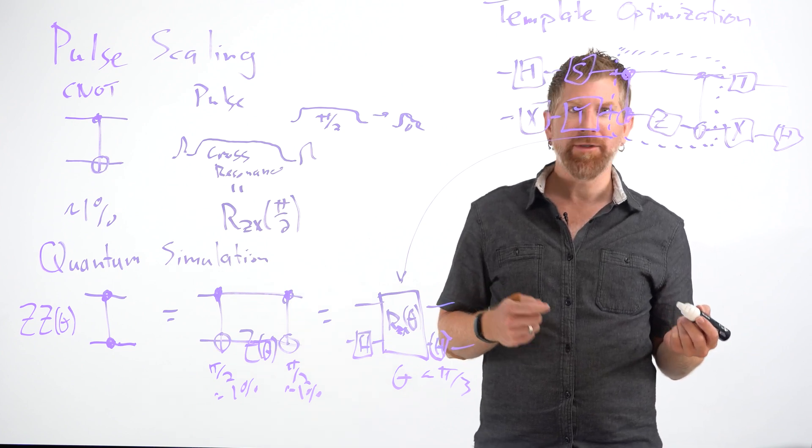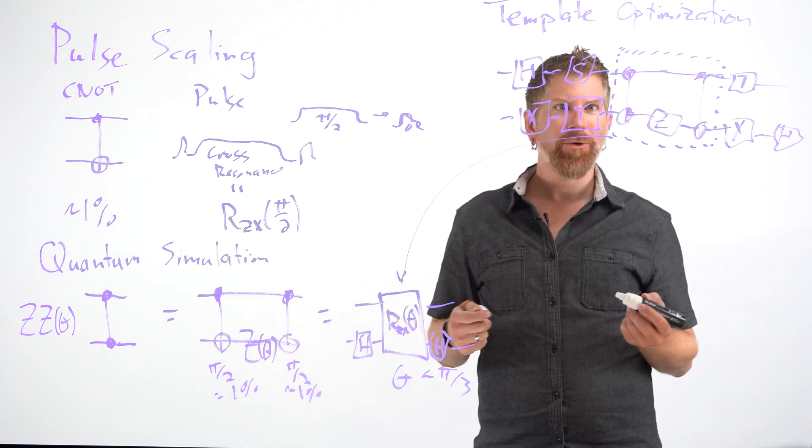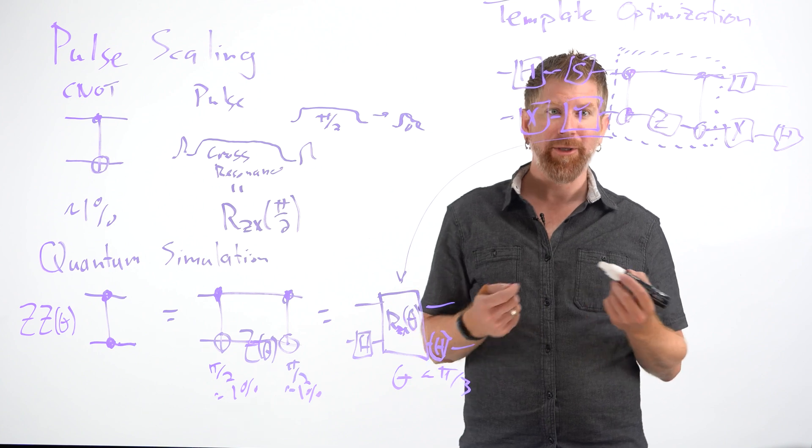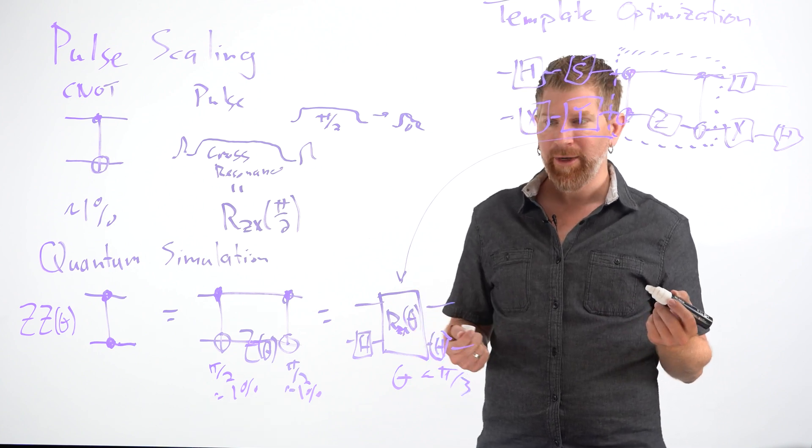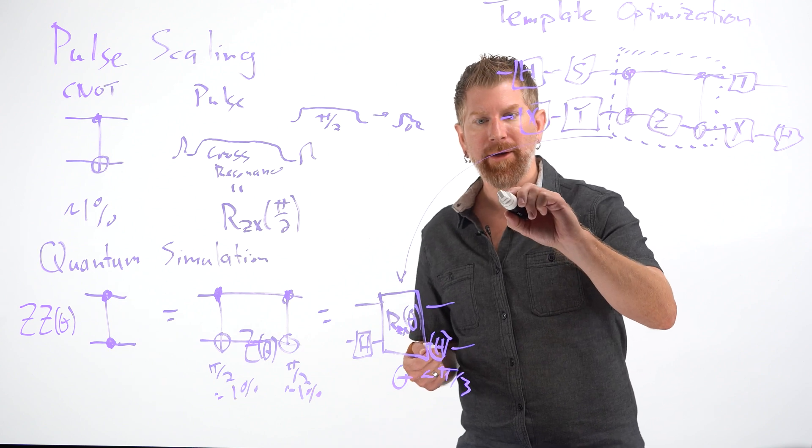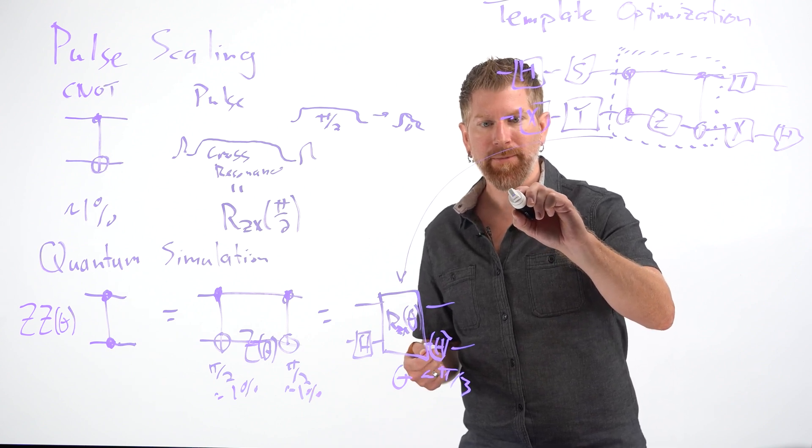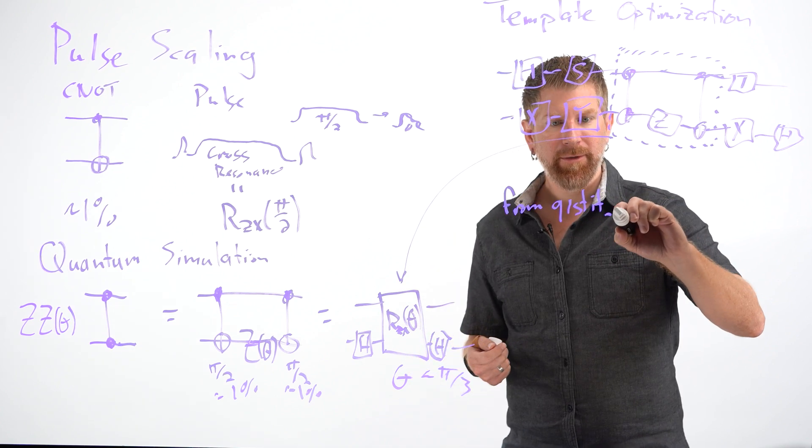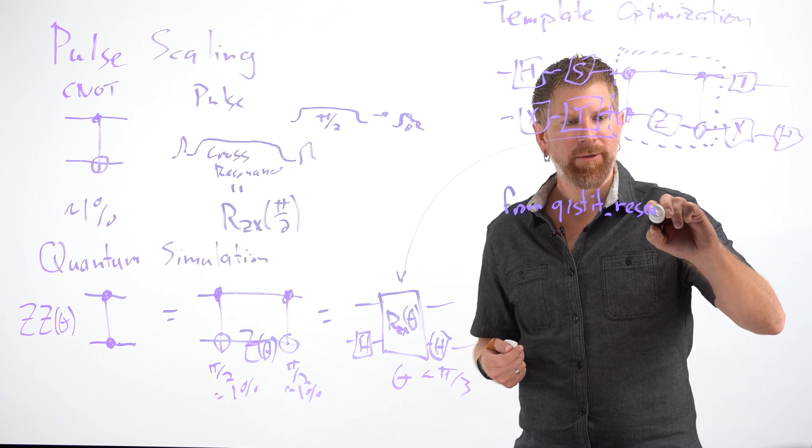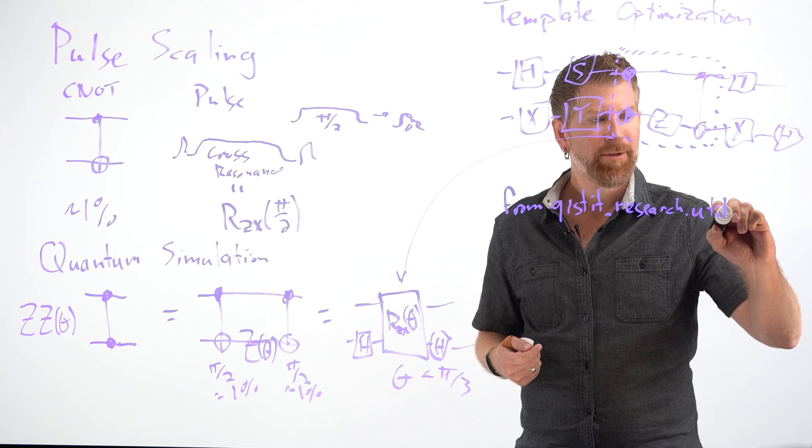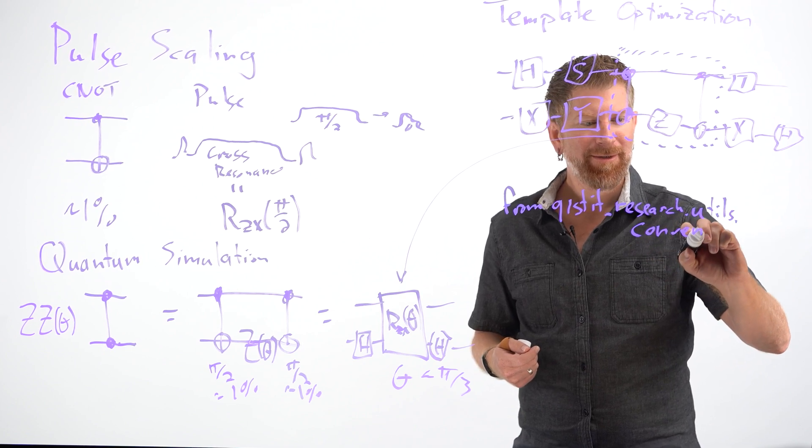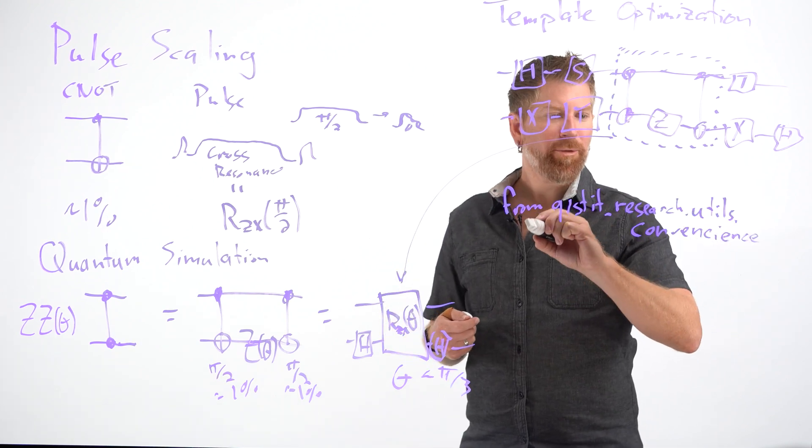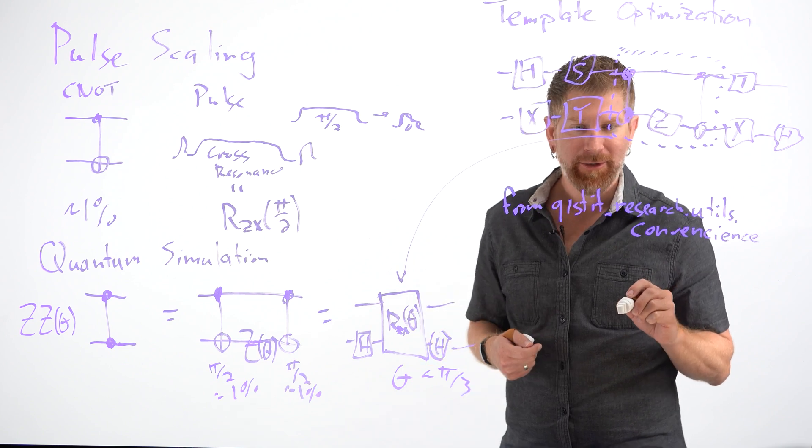We call it template optimization because there are many templates that you can use to replace things more efficiently. Now, this could be quite time consuming. So you may want to do this to smaller circuits. For example, if you're doing trotterization, you can do it to a single trotter step and then build the circuit out later. So in this way, we have two methods from a newer library called Qiskit research. Qiskit underscore research dot utils dot convenience, conveniently long. We'll provide a link to the source on how to install instructions in the description below.